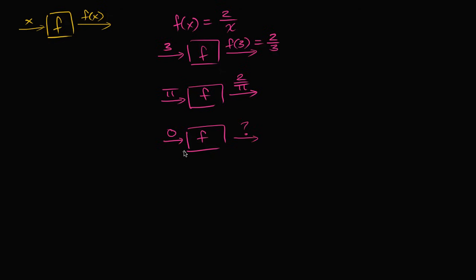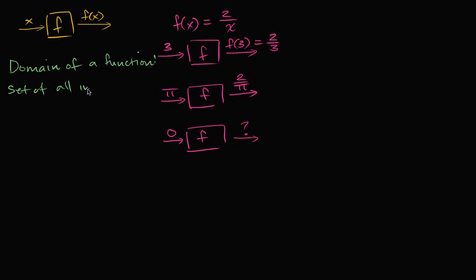This gets to the essence of what domain is. Domain is the set of all inputs over which the function is defined. So the domain of this function f would be all real numbers except for x equals zero. Let me write down these big ideas. A domain of a function is the set of all inputs over which the function is defined, or the function has defined outputs.